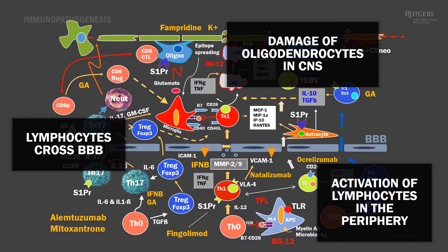For example, natalizumab specifically blocks adhesion of activated T-cells and B-cells to endothelial cells by targeting VLA-4 integrin, which participates in the adhesion of lymphocytes to VCAM-1-positive endothelial cells.